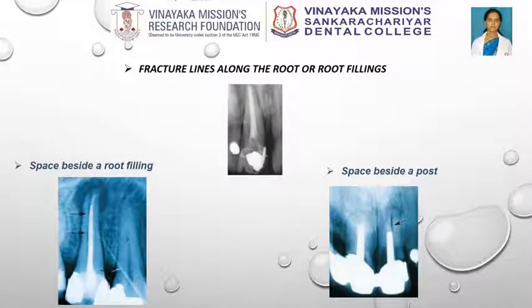Fracture lines along the root or root filling: on occasions, direct evidence of a fracture can be seen as a vertical radiolucent line running across the root or the root filling. Space beside a root filling: minor separation of fragments can result in the radiographic appearance of a vertical space adjacent to a root filling that is otherwise well obturated. Space beside a post: when a post is present in a vertically root fractured tooth, slight separation of the fractured fragments can result in the appearance of a space between the edge of the root canal and the post itself.